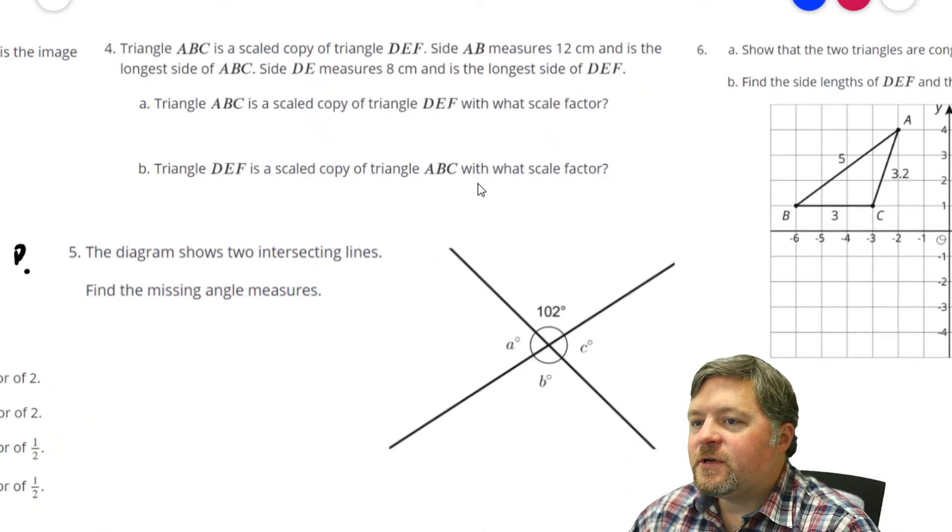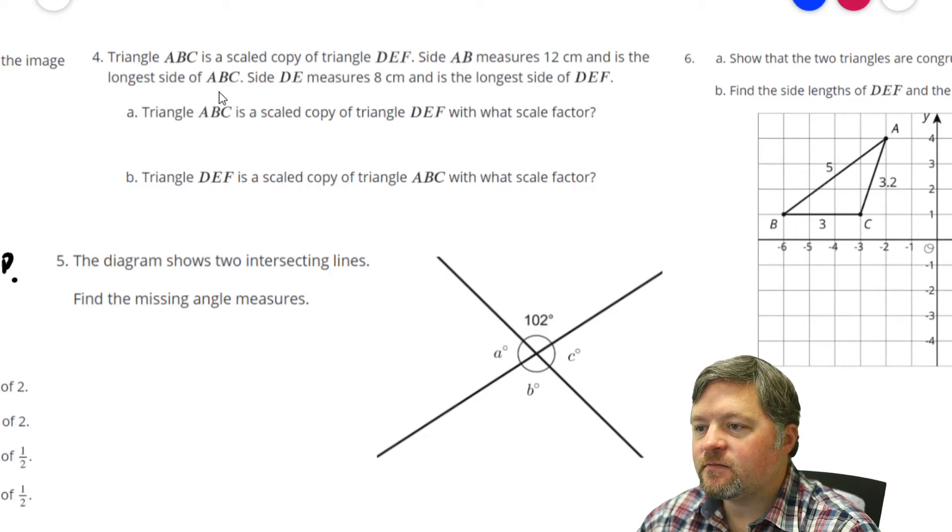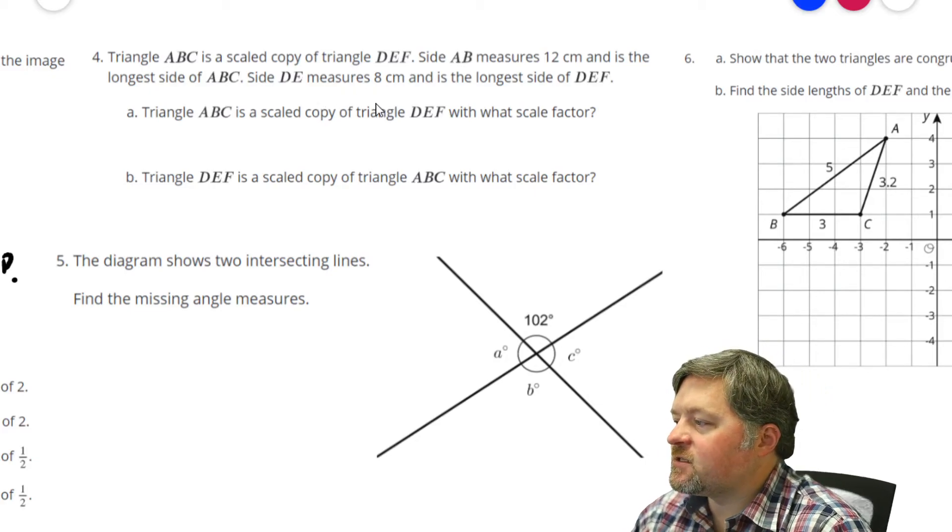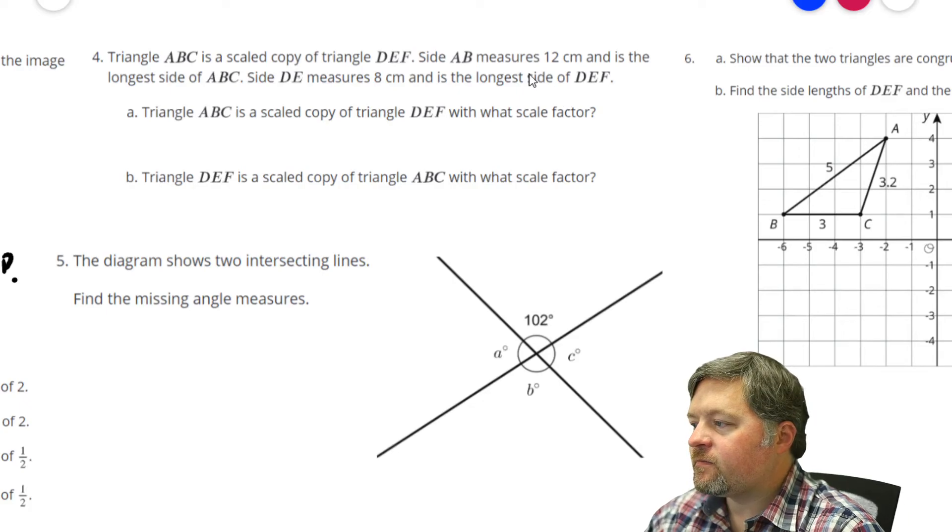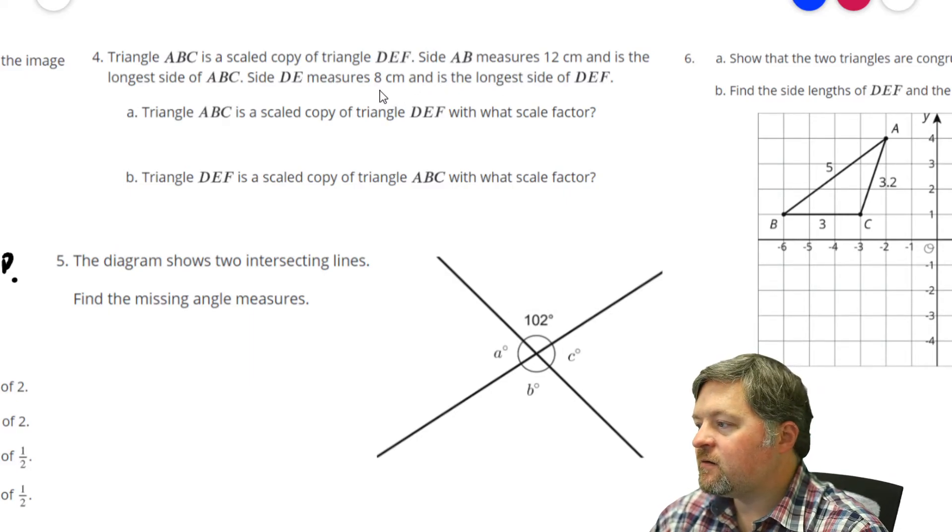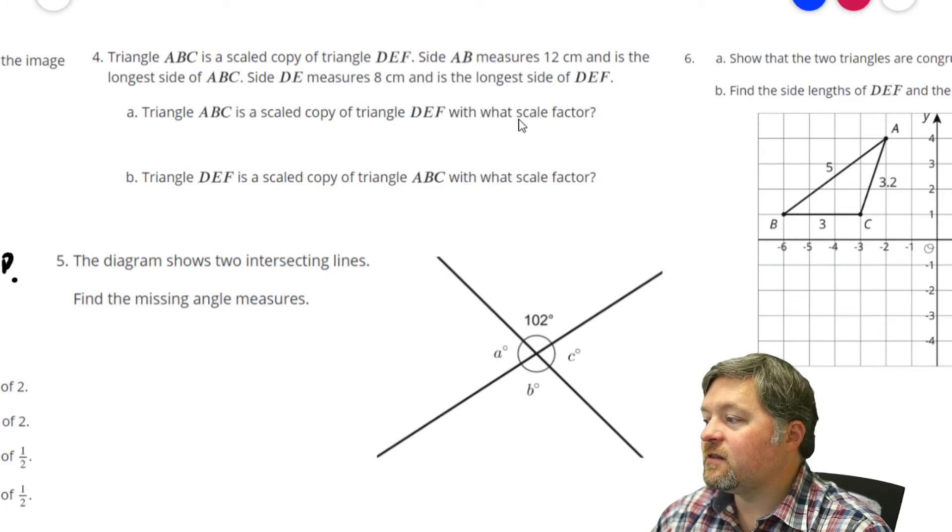Triangle ABC is a scaled copy of triangle DEF. Side AB measures 12 centimeters and is the longest side of ABC. Side DE measures 8 centimeters and is the longest side of DEF. So, one has a longest side of 12. The other one has a longest side of 8. ABC is a scaled copy of DEF. Well, DEF is smaller than ABC. So, if we want to find the scale factor.